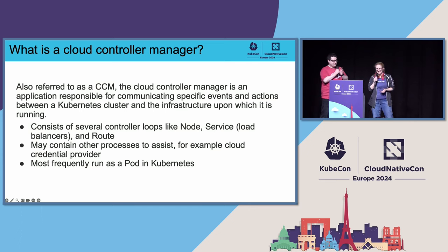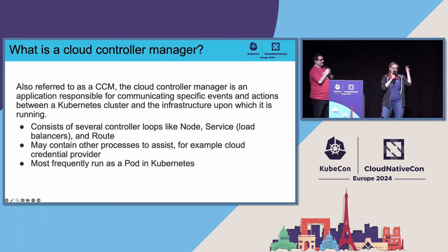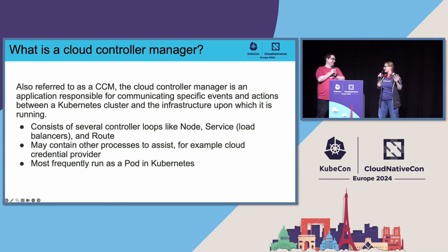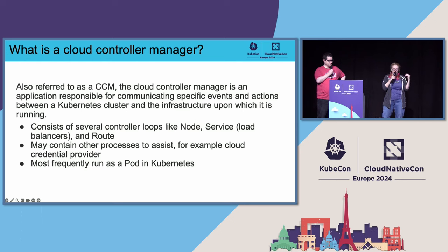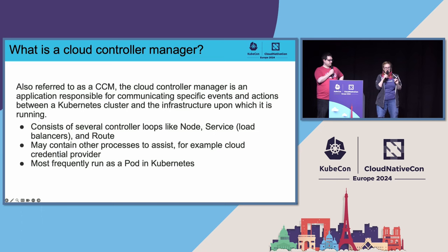So what is a cloud controller manager? The CCM is what's going to translate and link events or actions between your Kubernetes cluster and the infrastructure it's running on. It has controller loops, and the key difference — and this is where you start to see why we want to be out of tree — is that cloud credential providers can be different between clouds. You'll usually see your CCM run as a pod in Kubernetes.